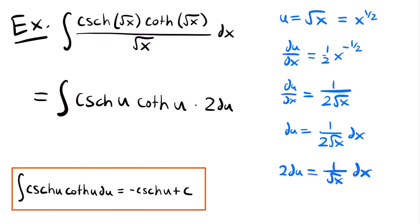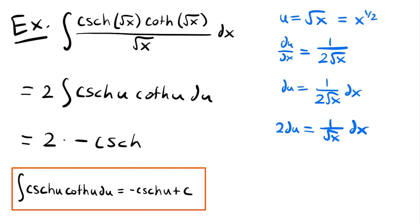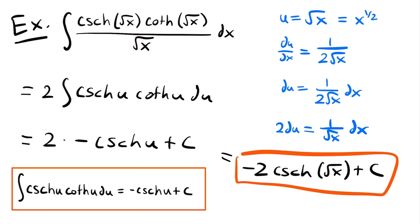Rewriting in terms of u: the integral of csch(u)·coth(u)·2 du. Replacing √x with u in both hyperbolic functions and replacing dx/√x with 2 du. Pulling the 2 out front gives 2 times the integral of csch(u)·coth(u) du, which matches our integration rule. This equals 2·(−csch(u)) + c. Replacing u with √x gives the final solution: −2·csch(√x) + c. That is the solution to this integral.